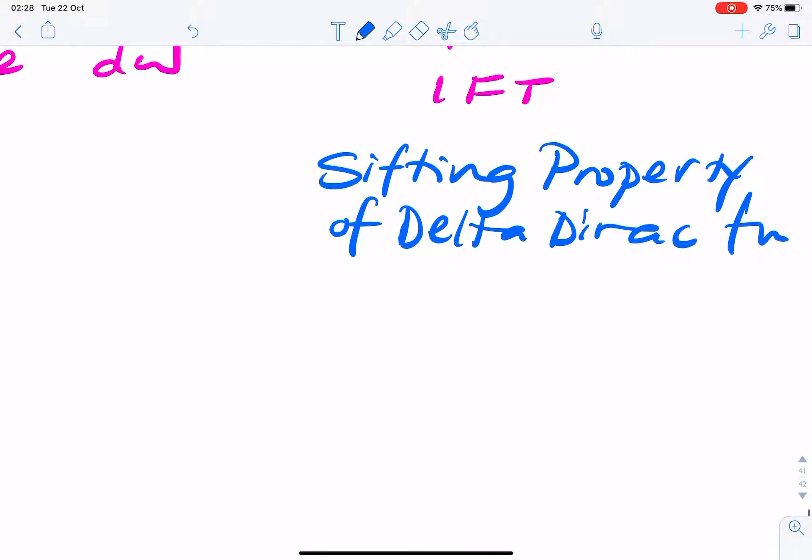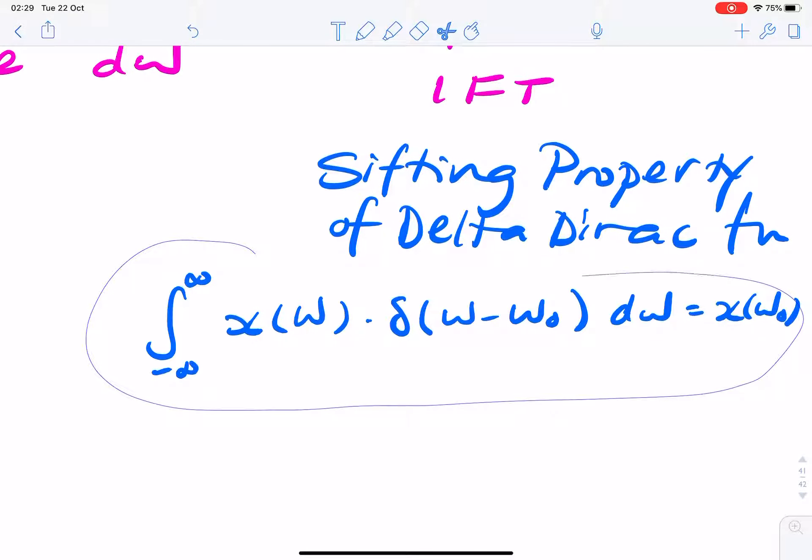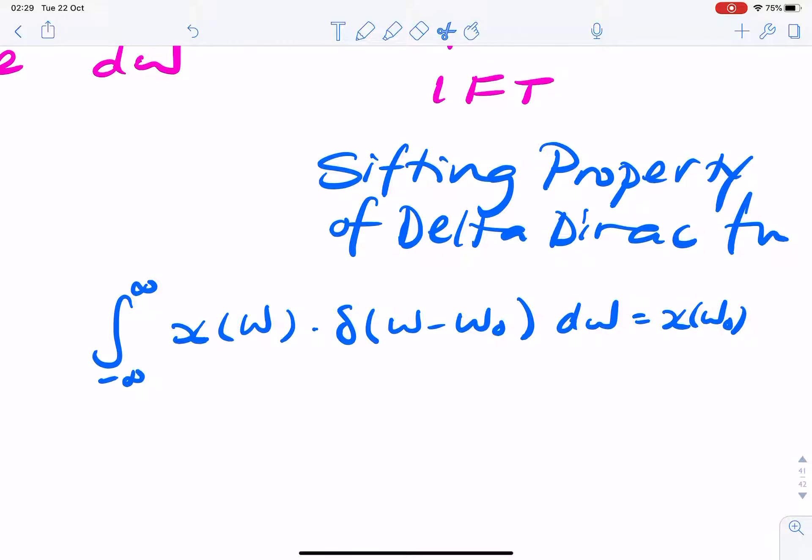Which says, if you remember, that if you integrate from minus infinity to infinity, some function, we usually use time, but I will use omega times an impulse at omega naught, then the answer will be x of omega naught.